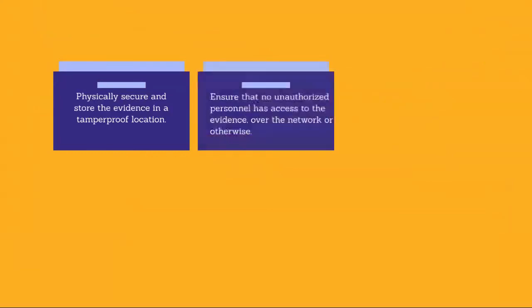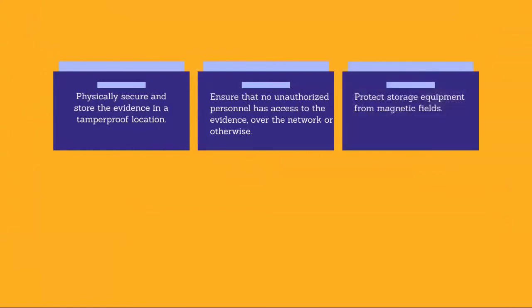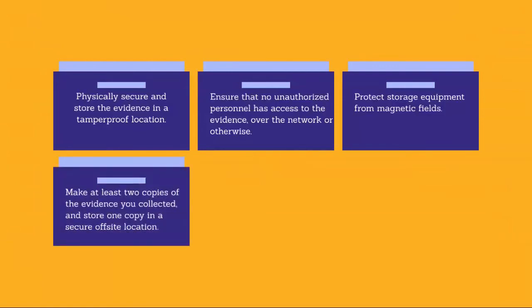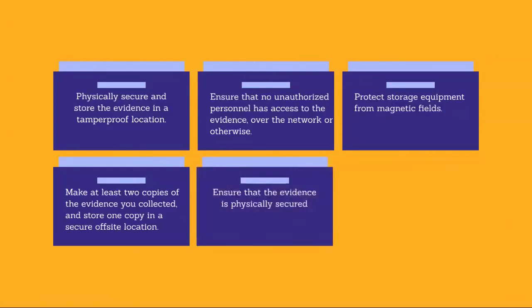Physically secure and store the evidence in a tamper-proof location. Ensure that no unauthorized personnel have access to the evidence over the network or otherwise. Document who has physical and network access to the information. Protect storage equipment from magnetic fields and use static control storage solutions to protect equipment from static electricity. Make at least two copies of the evidence you collected and store one copy in a secure off-site location. Ensure that the evidence is both physically secured — for example, by placing it in a safe — and digitally secured, for example by assigning a password to the storage media.